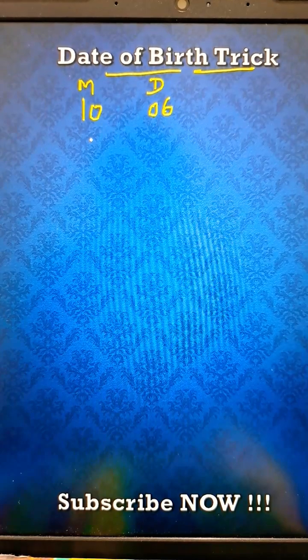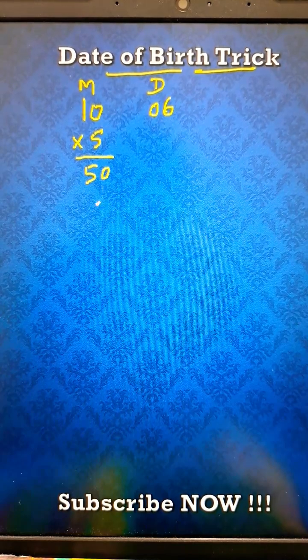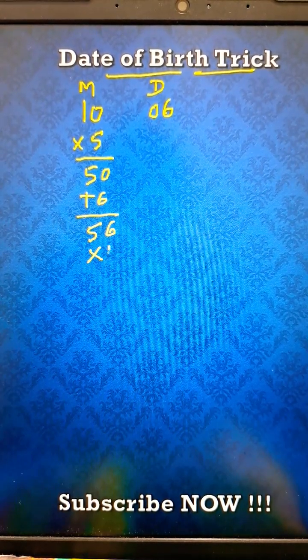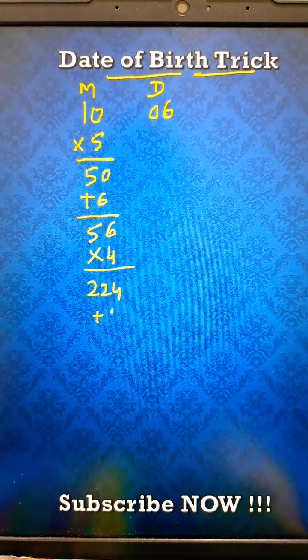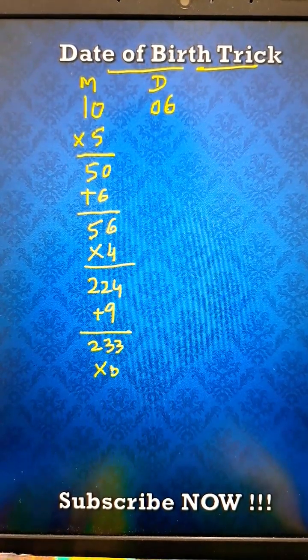You have to perform a series of operations. Multiply the month by 5, then add 6, then multiply the result by 4, then add 9, and then multiply the result by 5 again.